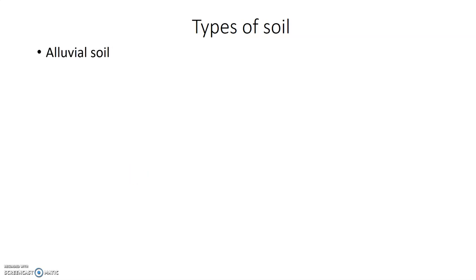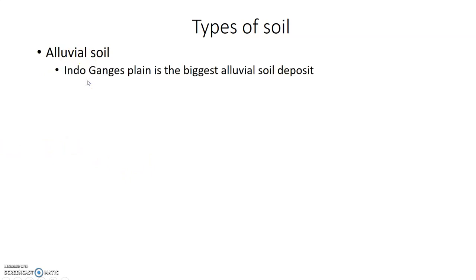Types of soil: Alluvial soil is river-deposited soil. In India, the Indo-Gangetic Plains represent the biggest alluvial deposit.